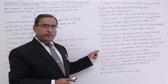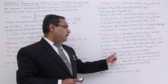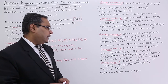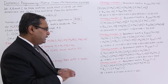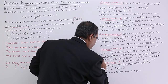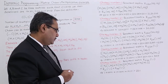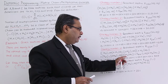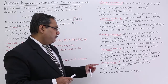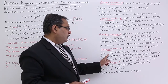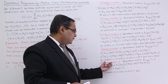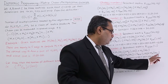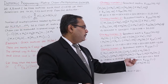Strategy number 4: we first multiply M2 and M1, then with the resultant matrix multiply by M4, and finally M3 comes last. Complexities: 1×100×1 = 100, then 1×1×100 = 100, then 1×100×1 = 100. Total: 300 multiplications.